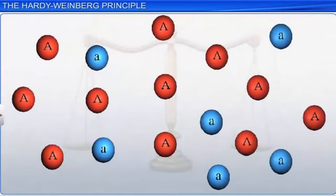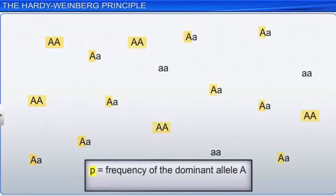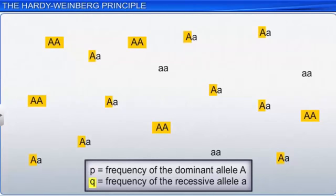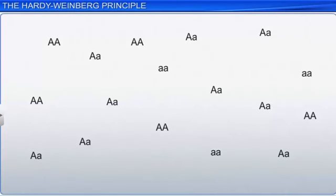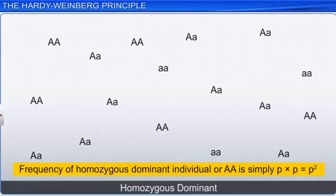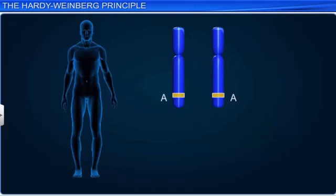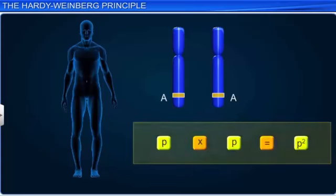In a diploid individual, P represents the frequency of the dominant allele capital A, while Q represents the frequency of the recessive allele small a. Therefore, we can also say that in a population, the frequency of a homozygous dominant individual, that is capital A capital A, is simply P square. In other words, the probability of allele capital A with a frequency of P to appear on both chromosomes of a diploid individual is defined as the product of the probabilities, which is P into P, or P square.